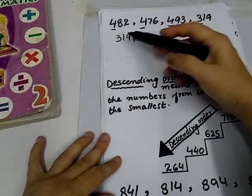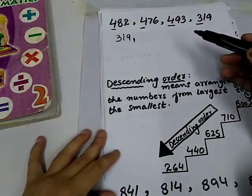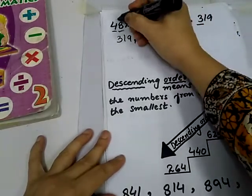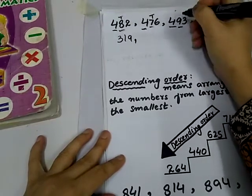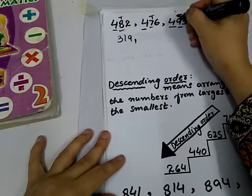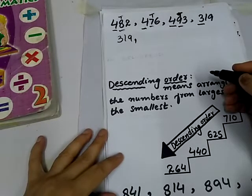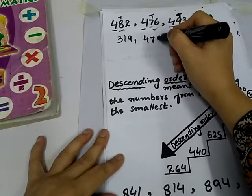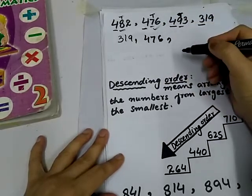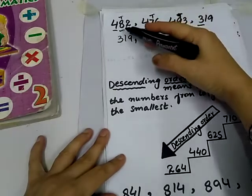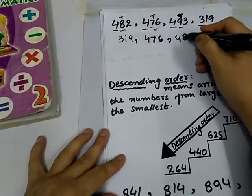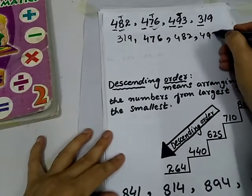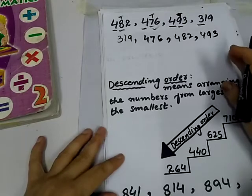Now, these are all 400 place value. Now, check the 10 value. 10 value is 8, 10, 7, 10 and 9, 10. So, the smaller 10 place value is 7. Now, write 476. Now, next is 8 is smaller than 9. So, write 482. And last is 493. Now, this is our ascending order.